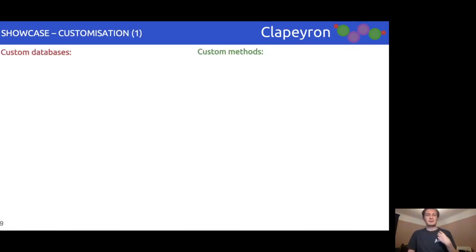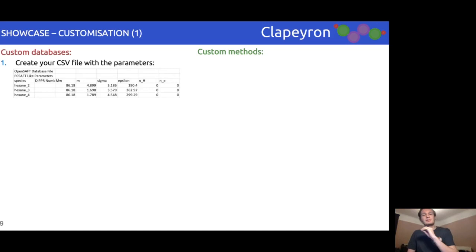The last aspect of Clapeyron we would like to show today is our ability to allow for customization in all aspects of the package. Firstly, we allow for customization of the databases for those who wish to test out their own parameters. Clapeyron uses CSVs instead of the more common XML files, which are often difficult to read.